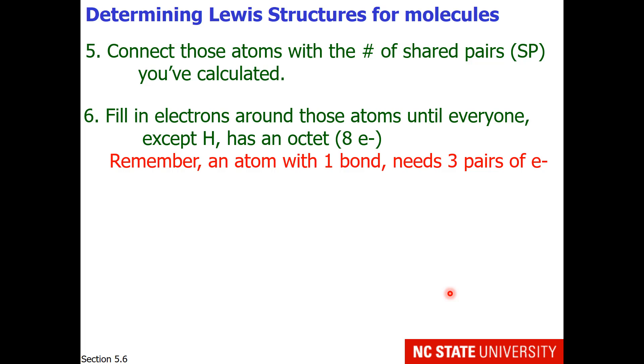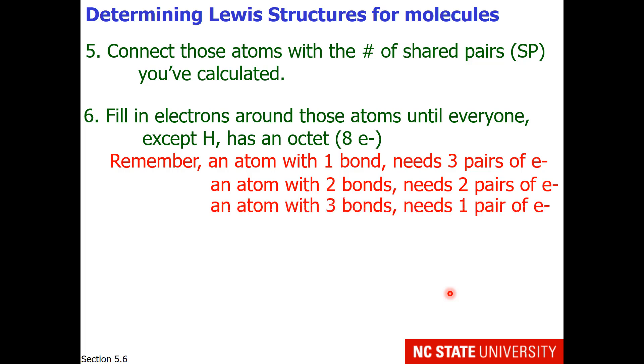So if you have atoms other than hydrogen with one bond, you should put three pairs of electrons. Atoms with two bonds need two pairs of electrons. An atom with three bonds needs one pair of electrons.